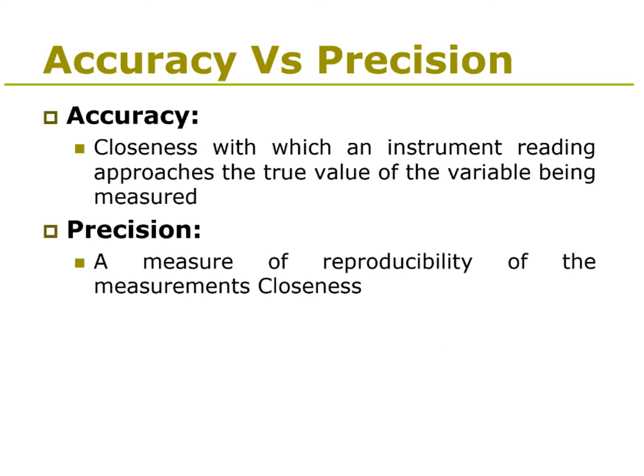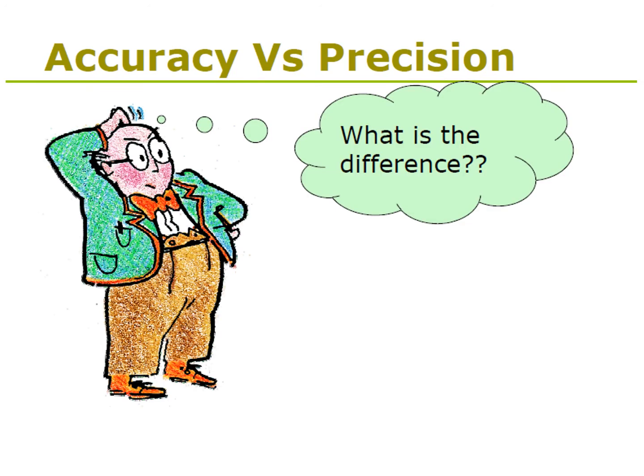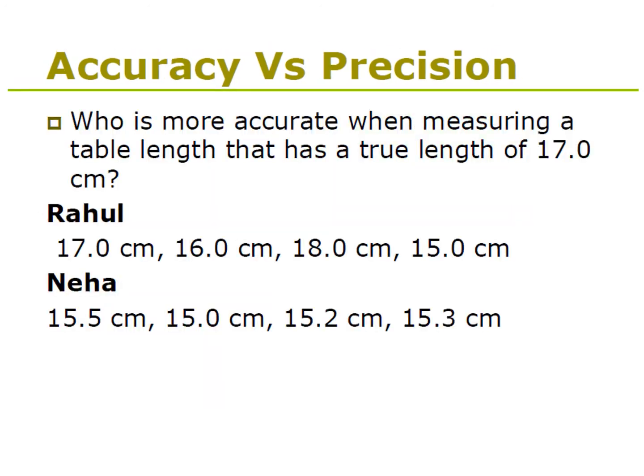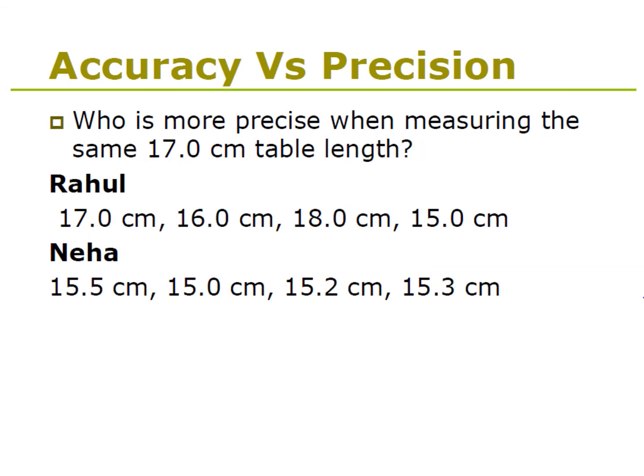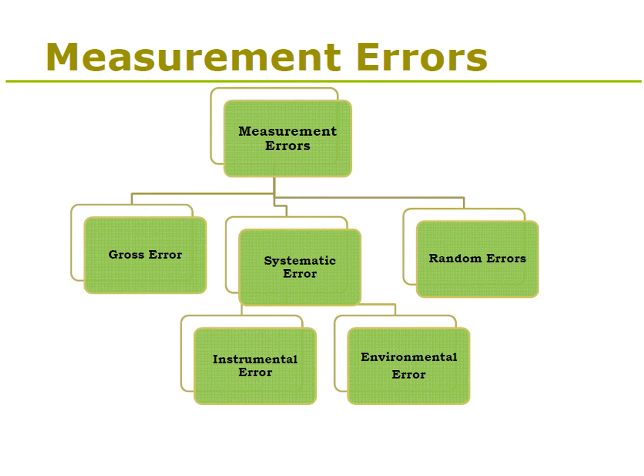We also have to understand the difference between accuracy and precision. Accuracy is how close my measured value is to the true value. Precision refers to whether my instrument, when taking a reading for the same quantity again and again under the same conditions, gives me the same output consistently. We will check this through examples and then see what types of errors come in a system.